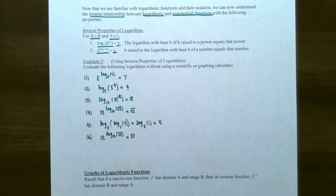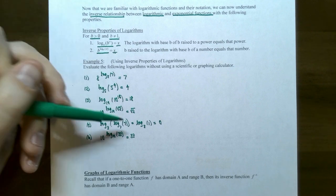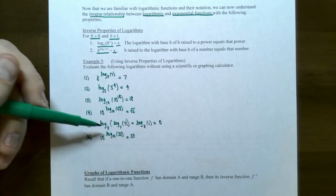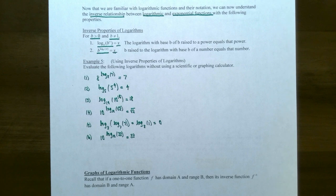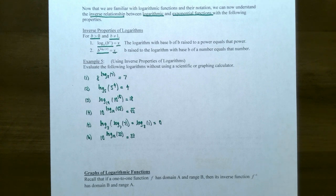We now have four logarithmic properties: the two inverse properties, log base B of B to the x equals x and B to the log base B of x equals x; plus log base B of B equals 1; and log base B of 1 equals 0. This is a good place to stop. In the next video we'll look at graphs of logarithmic functions. If you have any questions about the examples, exponential form, logarithmic form, or any of these four properties, please let me know, and I'll see you in the next video.